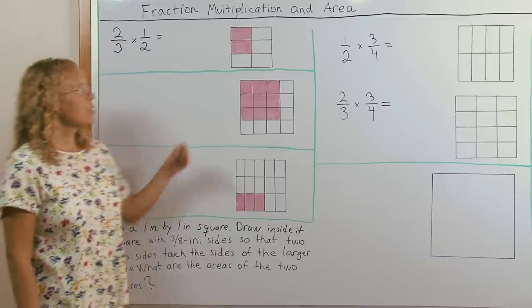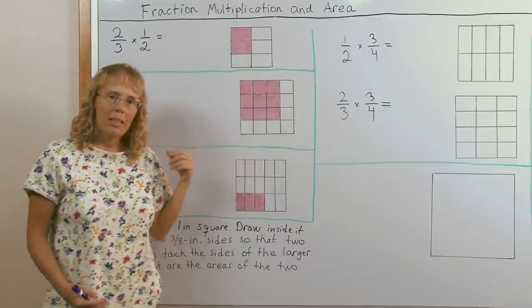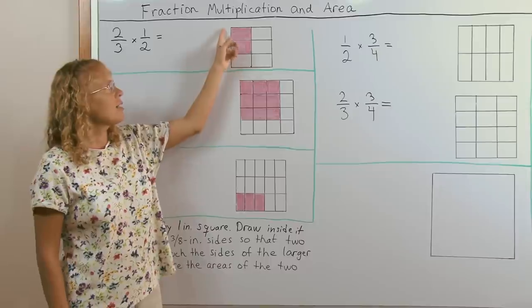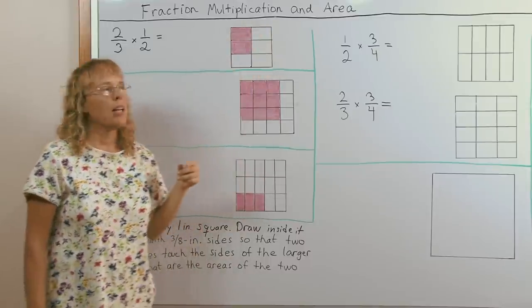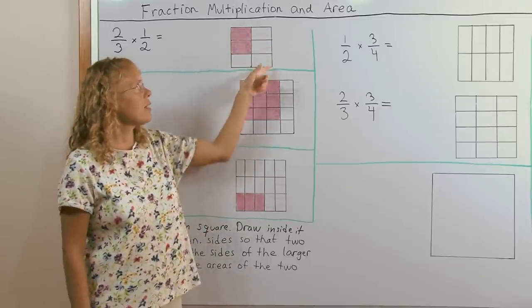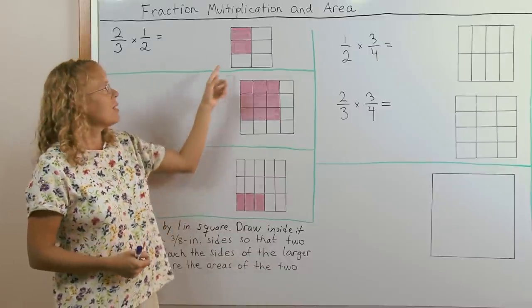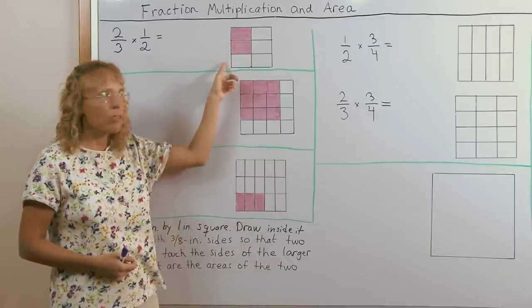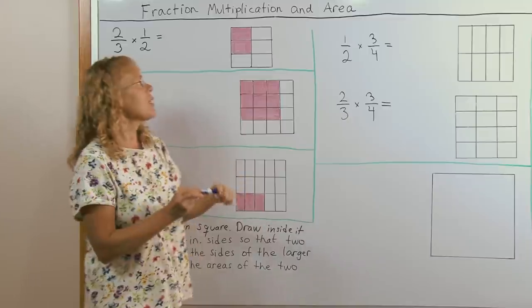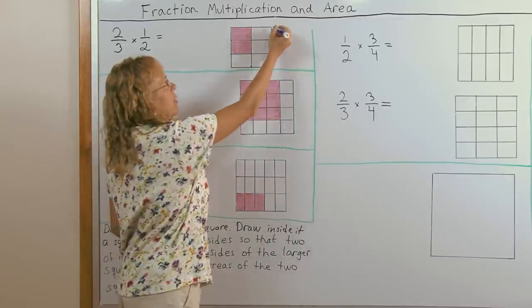We know that to find the area of a rectangle you would multiply the side times the side. Think of this whole rectangle as having the area of one square unit. So one side here, the whole side would be one unit and this side would be one unit. You can even mark them here.